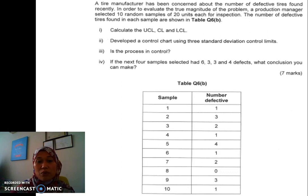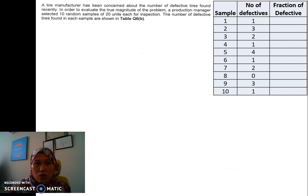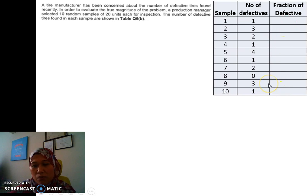We need to develop a control chart using three standard deviations, and then conclude whether the process is in control. We also look at what happens when we add another four samples into the P Chart, and what conclusions we can make after that. First, we need to do the fraction defective. What is fraction defective?